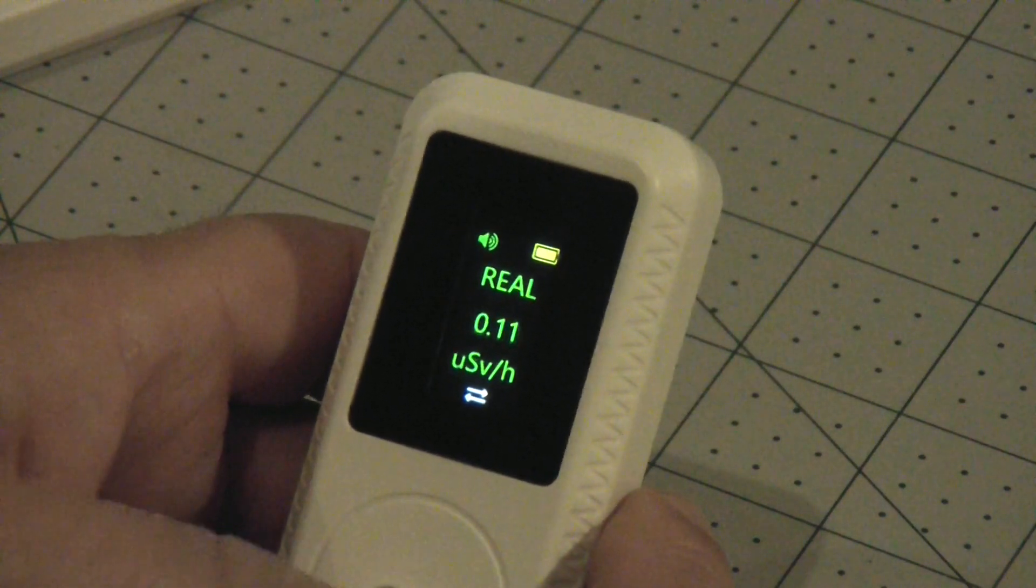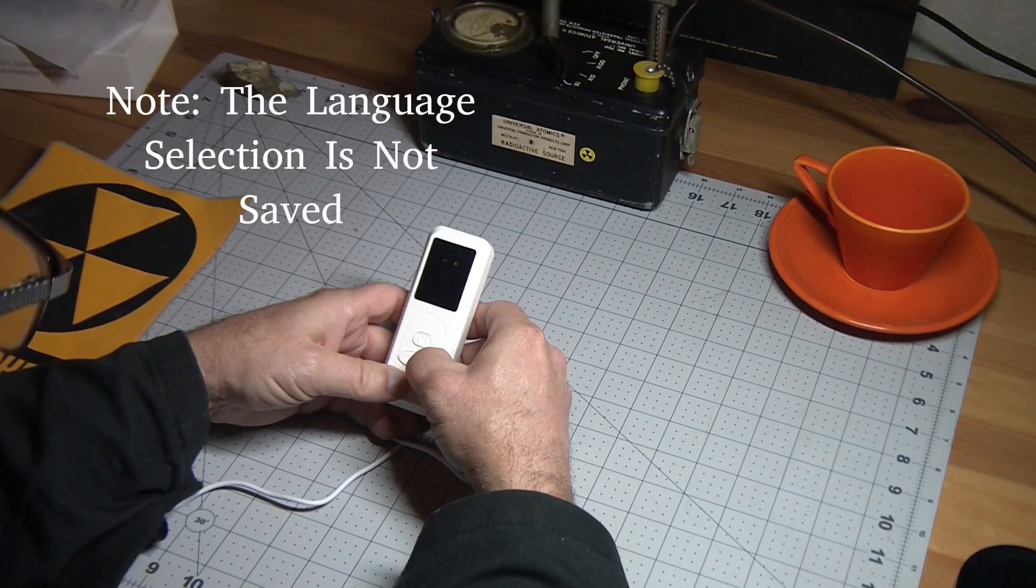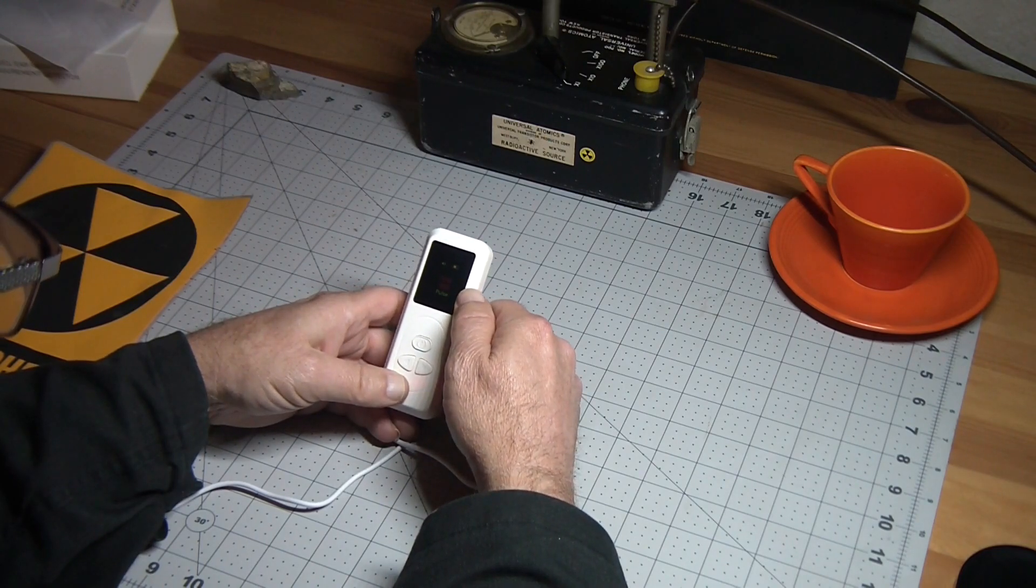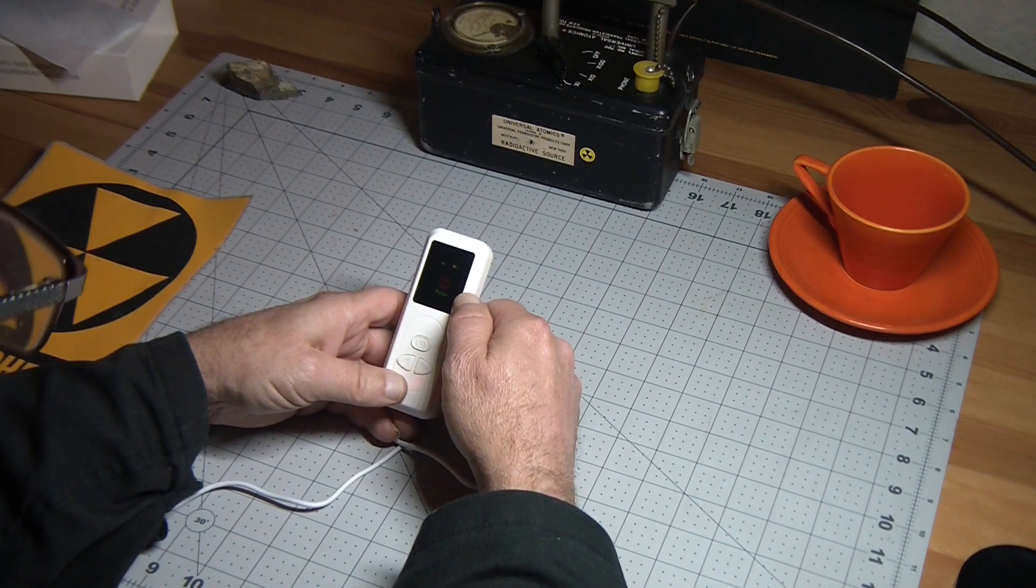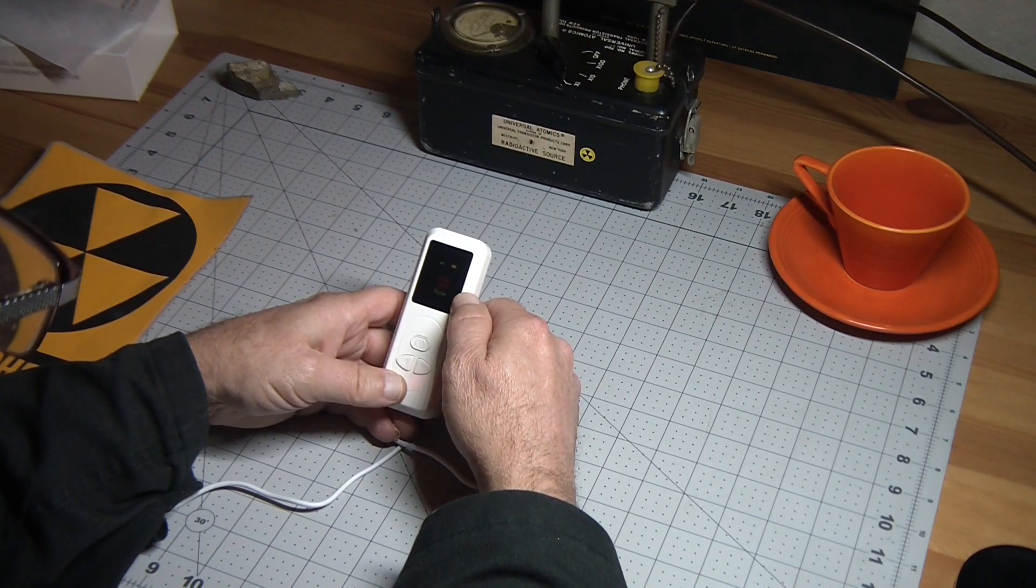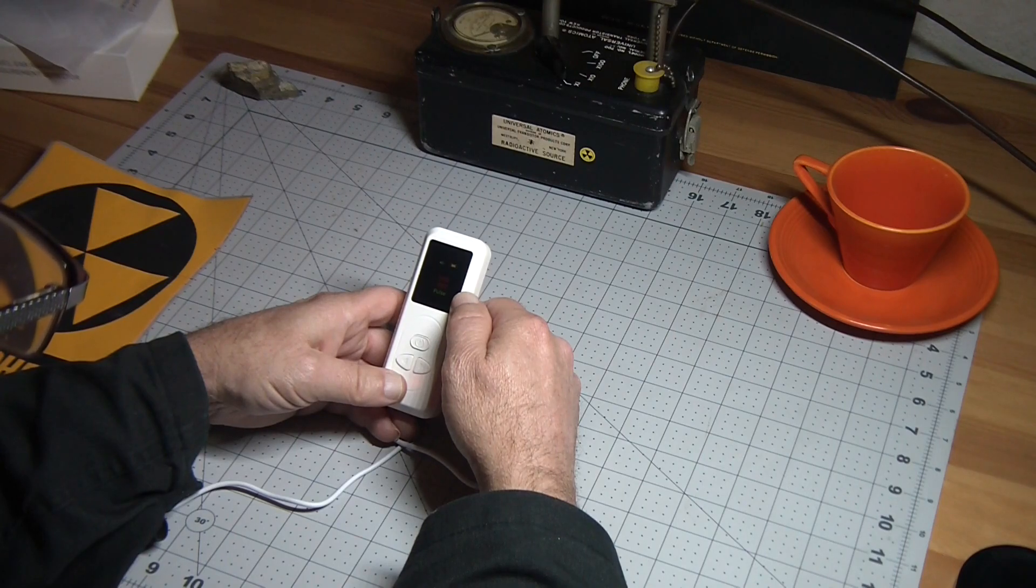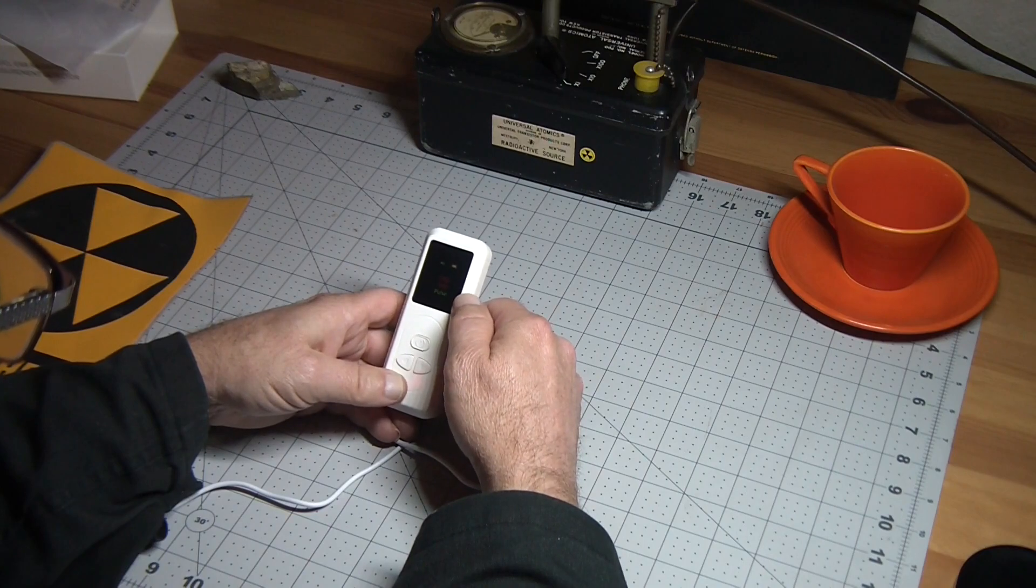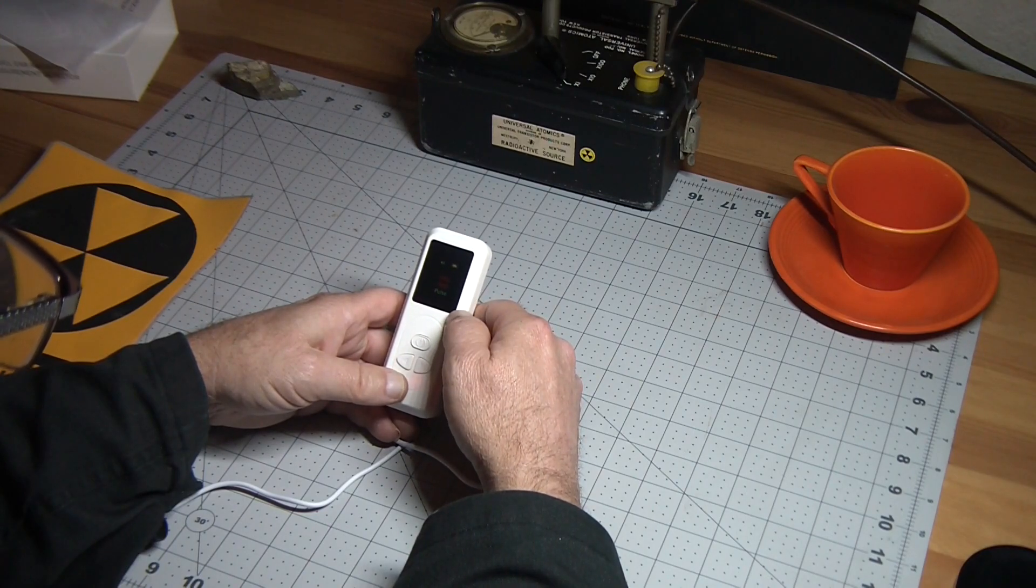If we push and hold the right button, we get this other screen here that has two numbers. It is starting at zero and it said pulse. Now, again, I do not hear any clicks or counts. I do not know what this screen means. Two sets of red numbers and it says pulse.